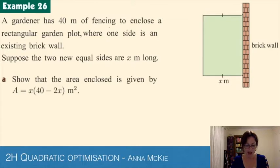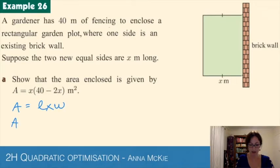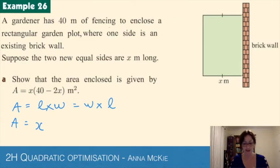The first part asks us to show that the area enclosed is given by this formula. You have to work out how that's constructed. Area equals length times width. Our width we know is x - it doesn't matter which way around you do this. If our width is x, we have to somehow identify the length. The length is this side here.